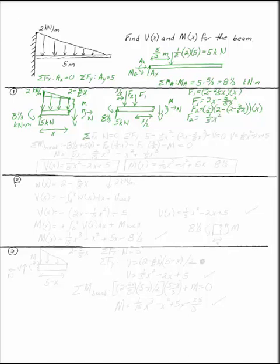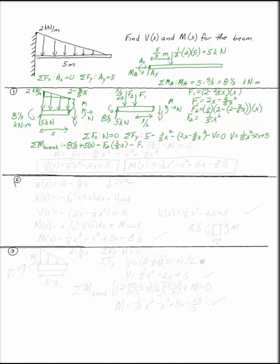Now I can write my sum of forces and moments. Sum of forces in X gives N equals zero. Sum of forces in Y gives: five minus F2 (one-fifth X squared) minus F1 (two X minus two-fifths X squared) minus V equals zero, or V equals one-fifth X squared minus two X plus five. For the sum of moments at the break, the eight and a third acts opposite to five X. F2 acts at two-thirds X from the break, and F1 acts at X over two from the break, giving my internal moment M.